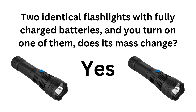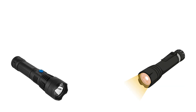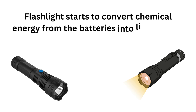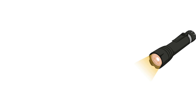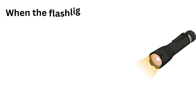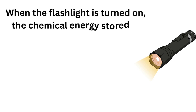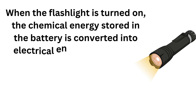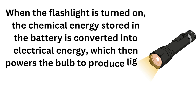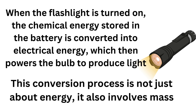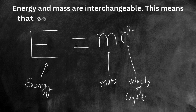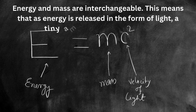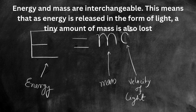Here I have two identical flashlights. Both have fully charged batteries and they're ready to shine. But what happens when we turn one of them on? That flashlight starts to convert chemical energy from the batteries into light energy, and this process actually results in a loss of mass. When the flashlight is turned on, the chemical energy stored in the battery is converted into electrical energy, which then powers the bulb to produce light. This conversion process is not just about energy — it also involves mass. According to Einstein's famous equation, E equals mc squared, energy and mass are interchangeable. This means that as energy is released in the form of light, a tiny amount of mass is also lost.